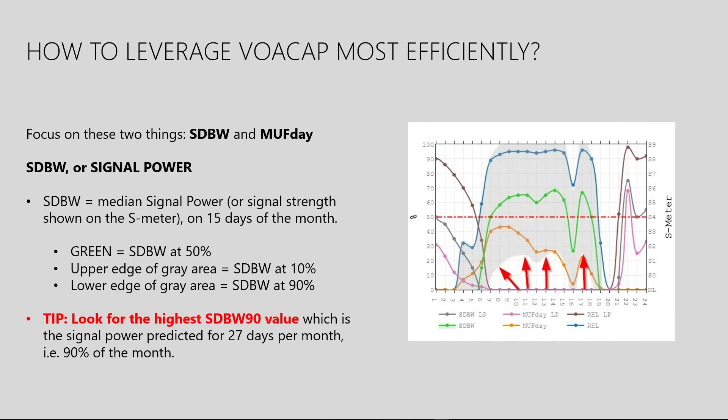Now let's see how the predictions look. In a band-specific prediction, we are interested in two graphs only: the green graph, which is the signal power or signal strength, and the orange graph, which is the MUF day graph. We also want to look at the gray area on the upper and lower sides of the green signal power graph. The green graph is the median signal power — in other words, the signal strength predicted to happen for 50%, or 15 days, in a month. The signal power can be seen on the S meter on the radio.